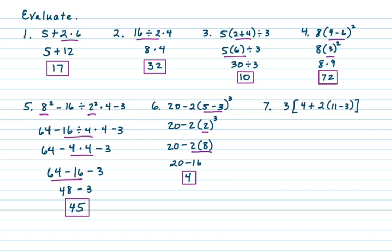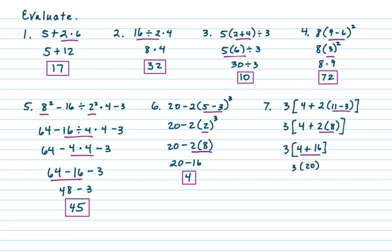On number seven we have parentheses within parentheses — the brackets are just another way to write parentheses but make things stand out better. With nested parentheses we work inside out, starting with the innermost. We simplify 11 minus 3 to get 8. So we end up with 3 times the bracket 4 plus 2 times 8. Inside the bracket, multiply first: 2 times 8 is 16, so 4 plus 16 is 20. Then 3 times 20 is 60.